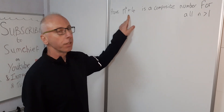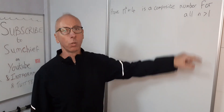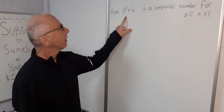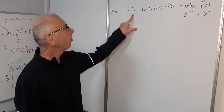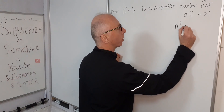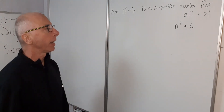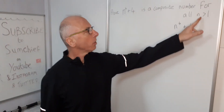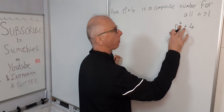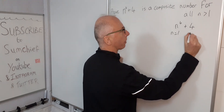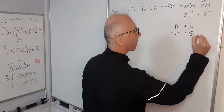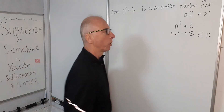We're going to try and prove that n to the 4 plus 4 is a composite number for all n greater than 1. Let's have a look at the term n to the 4 plus 4 and see if we can break that down. Now why can't we put 1 in there? For n equals 1, we get 1 to the power of 4 plus 4, which gives us 5. We know that 5 is a prime number.